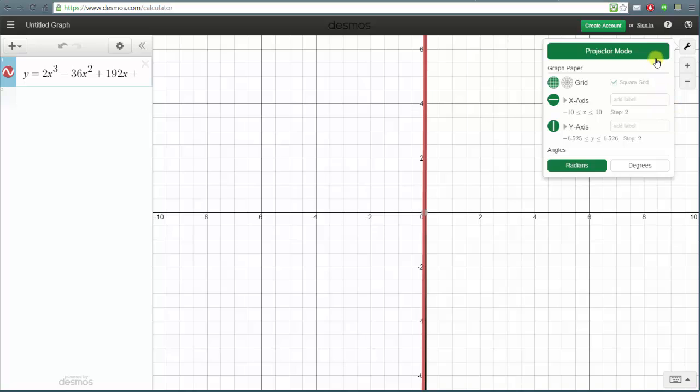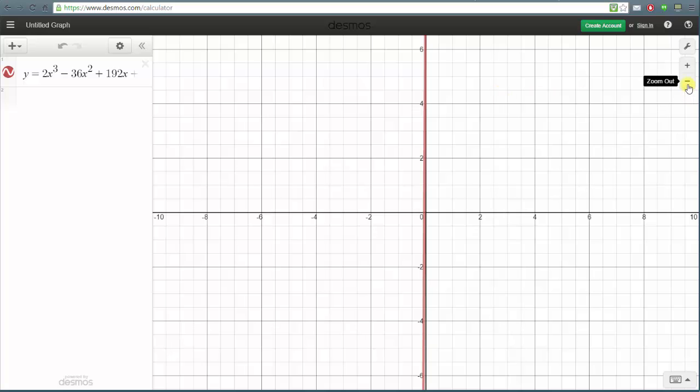So let's exit the settings by clicking on the wrench or just clicking on the coordinate plane and let's click minus to zoom out.